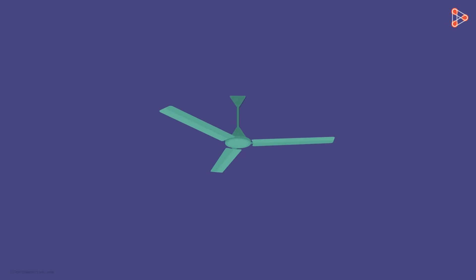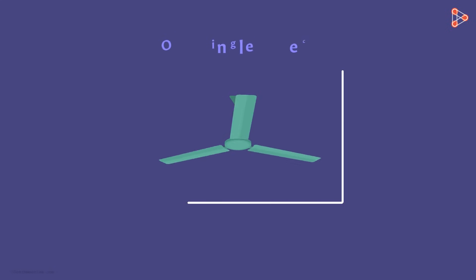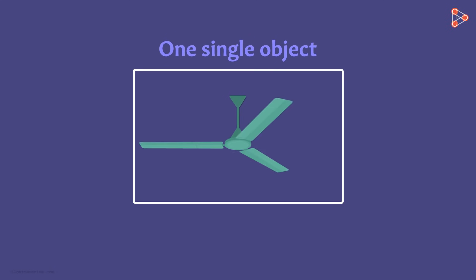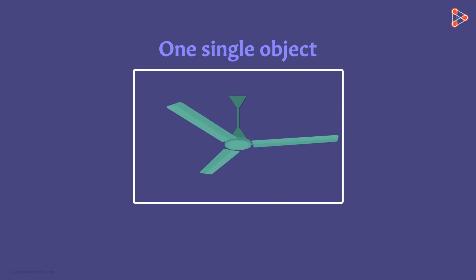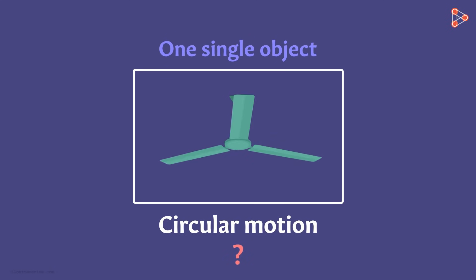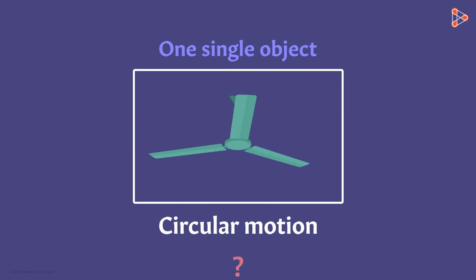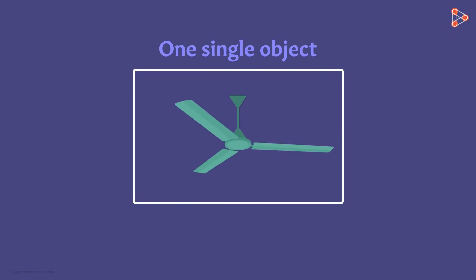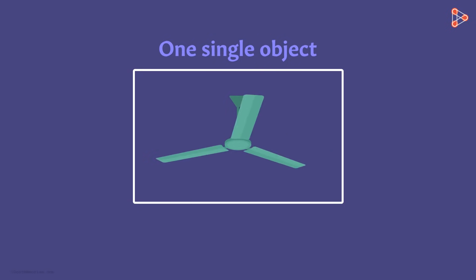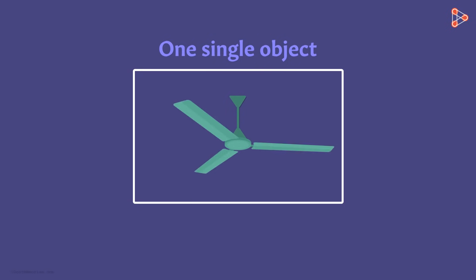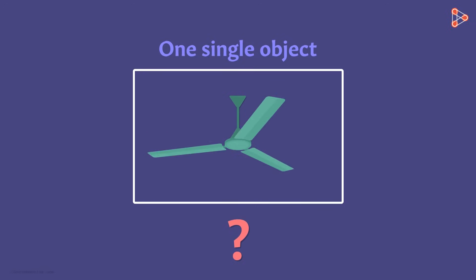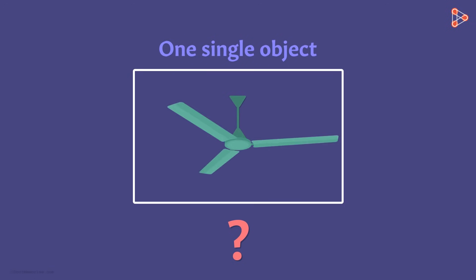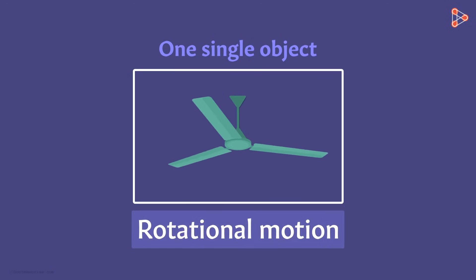Now what if I take the fan as a single object? Can I say that the fan as a whole is moving in circles? No, that would be incorrect. The fan as a whole is not going anywhere — the entire fan is not moving along the circumference of a circle. But which motion is it performing then?